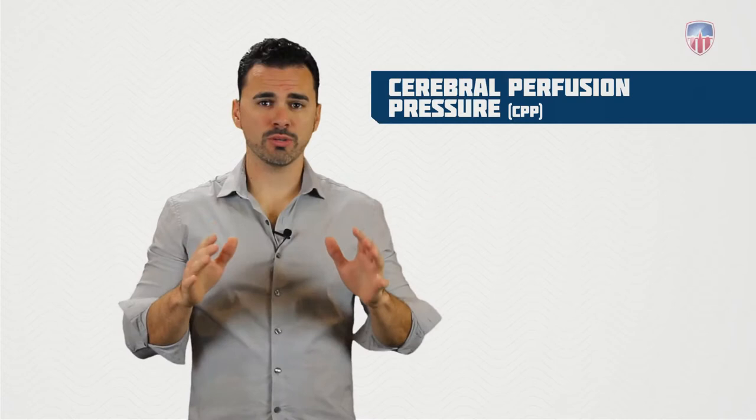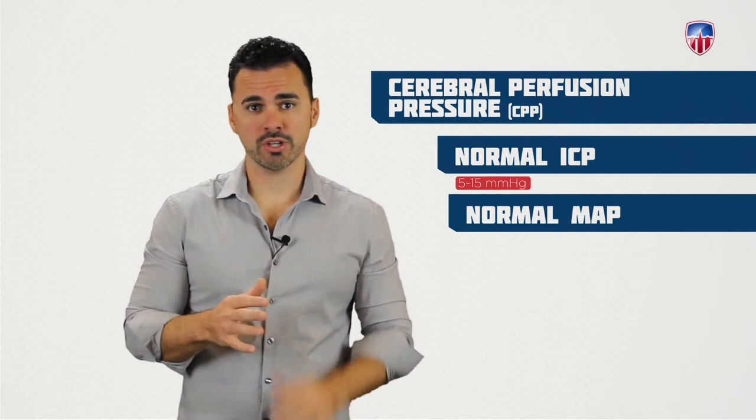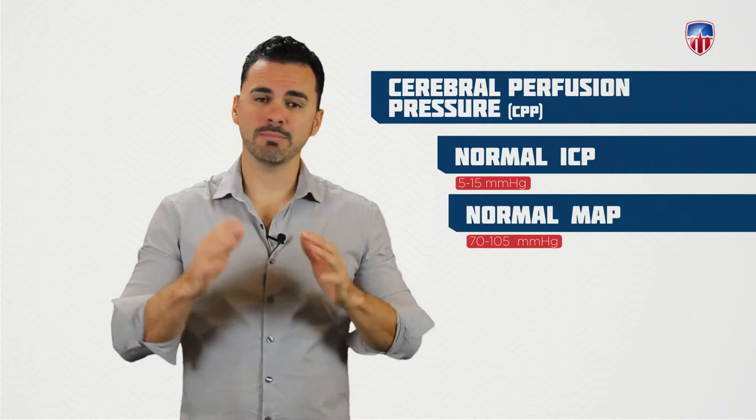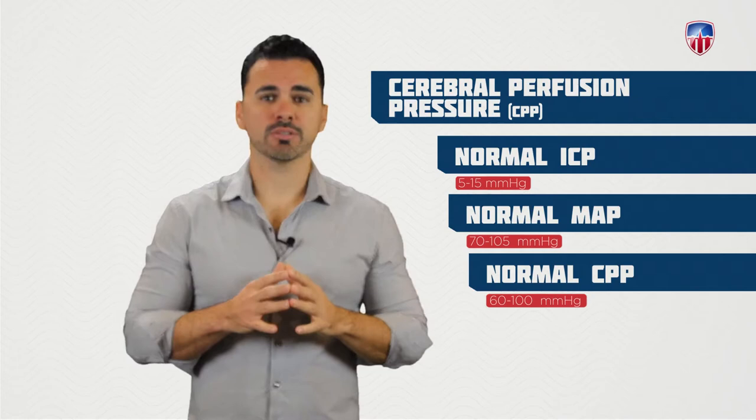Let's talk about cerebral perfusion pressure or CPP. The normal intracranial pressure values are 5 to 15 mmHg, and the normal mean arterial pressure is about 70 to 105 mmHg — generally 70 is the number referenced for the CCRN exam. You want to keep the MAP around that value. The normal CPP is between 60 to 100 mmHg.